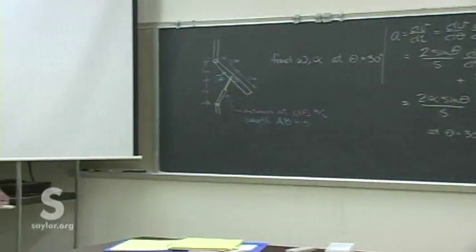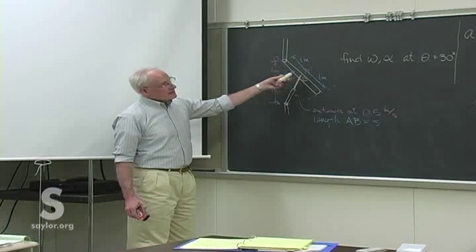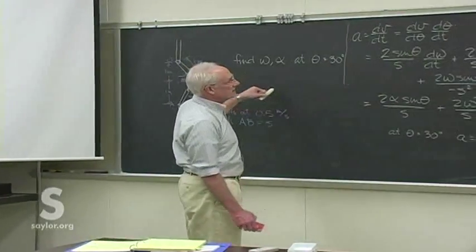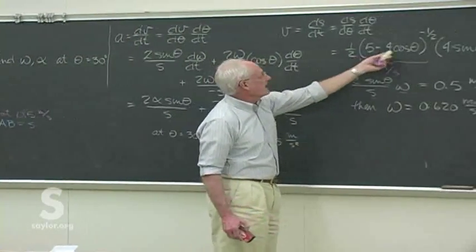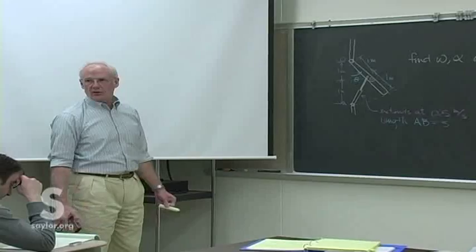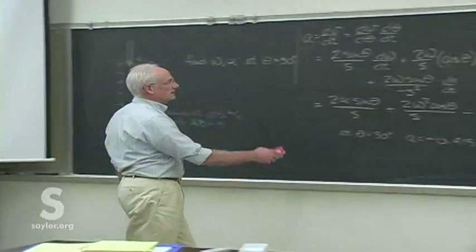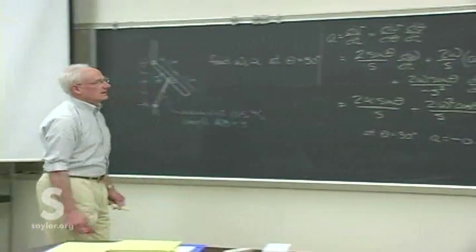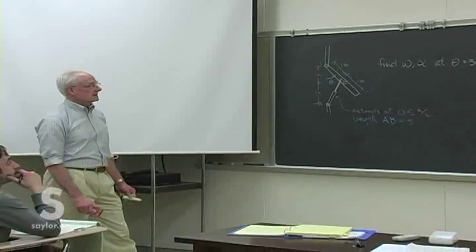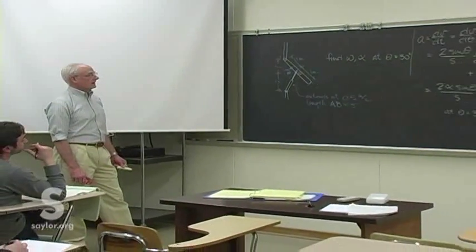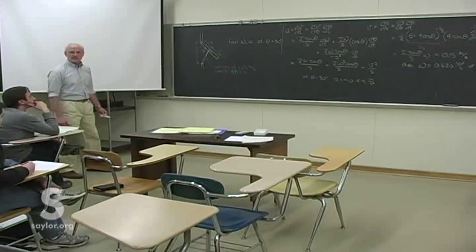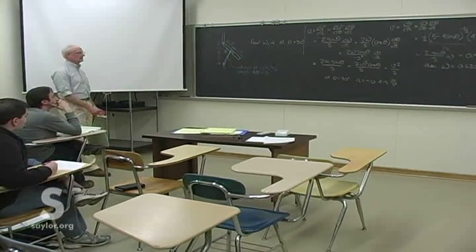The two hard parts are: first, establishing the original position equation, and second, taking the derivative with respect to time and getting all the pieces right - you can't lose any minus signs or squares. So we're not going to make a big deal about this one. This is much more of an academic exercise. The relative motion analysis is what students generally tend to grasp better and enjoy more because of that.